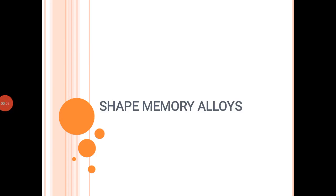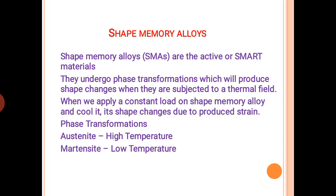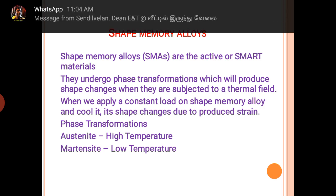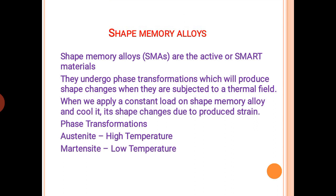Hello students, today we are going to deal with the topic of shape memory alloys. Shape memory alloys are also known as active or smart materials. The basic principle behind shape memory alloys is that they undergo phase transformation, which produces shape changes when they are subjected to a thermal field — that is, when a constant load is applied and the material is cooled, its shape changes due to the produced strain.